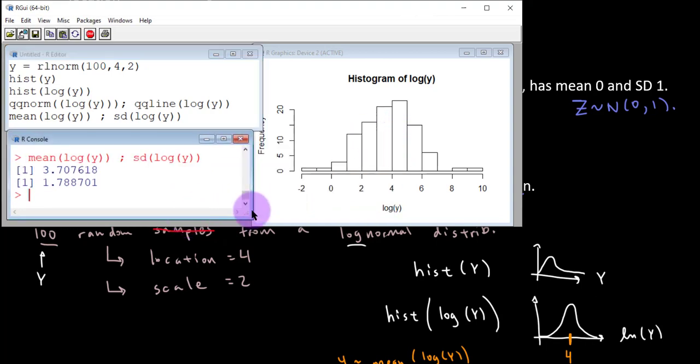Let's look at the mean and the SD of the log of Y. And yes, not exactly 4, not exactly 2, but approximately, and those are kind of far off, but that's the virtue of random sampling.